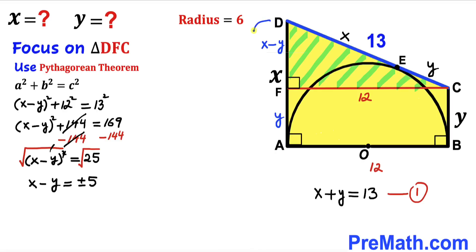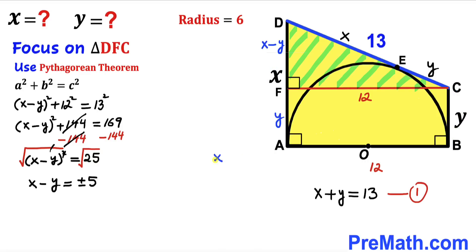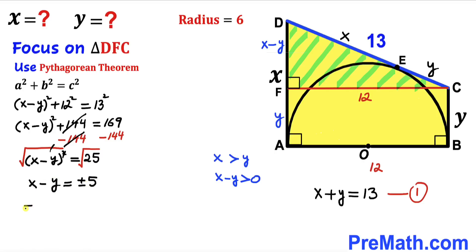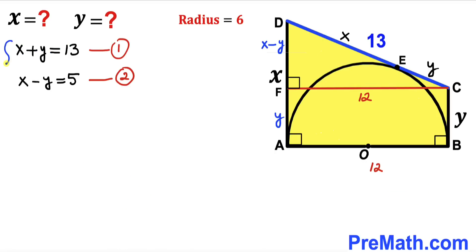Observing the diagram, X is larger than Y, so X minus Y must be greater than 0. Therefore X minus Y cannot take the negative value, and we conclude that X minus Y equals positive 5. We label this as equation number 2.